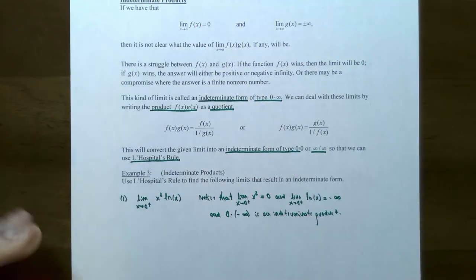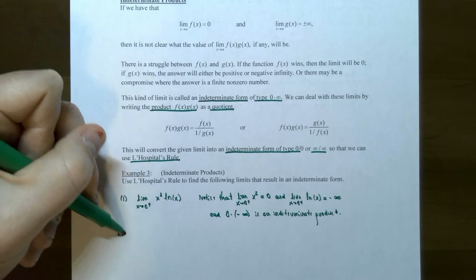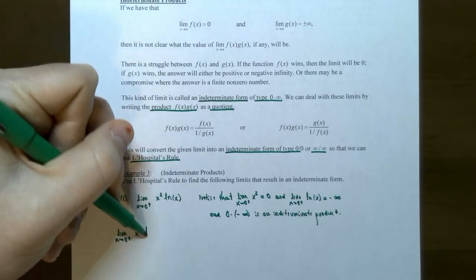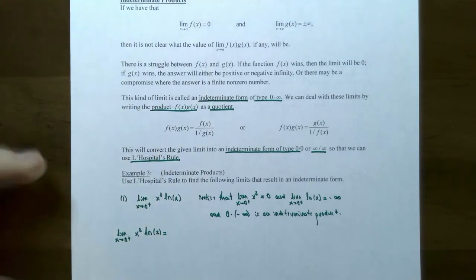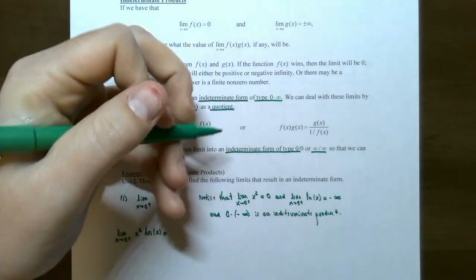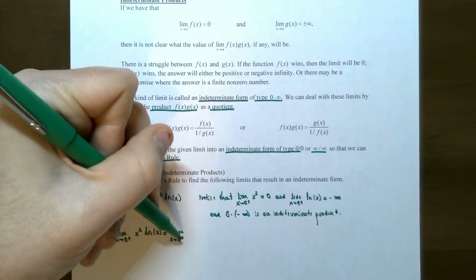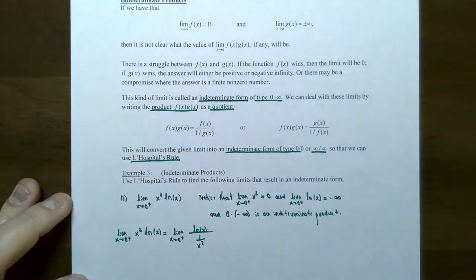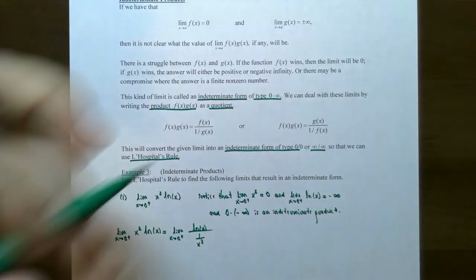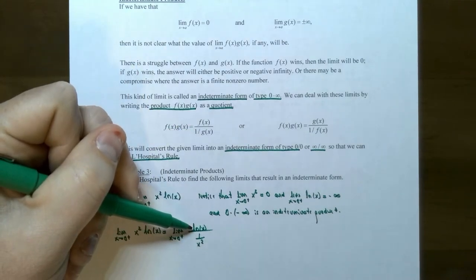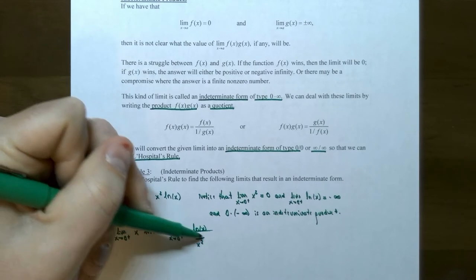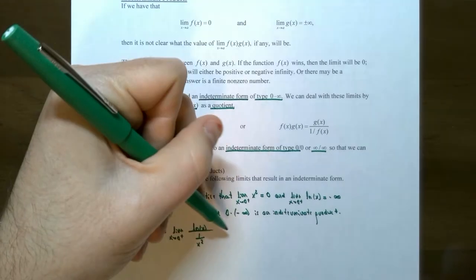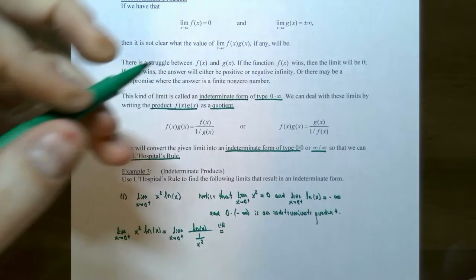We need to rewrite this product x squared times natural log of x as a quotient to produce an indeterminate form of type 0 divided by 0 or infinity divided by infinity. Let's keep natural log of x in the numerator, then rewrite the limit as natural log of x divided by 1 divided by x squared. We'll have negative infinity divided by positive infinity, because 1 divided by x squared grows without bound as x approaches 0 from the right. So now we can use L'Hôpital's rule.